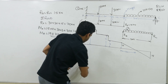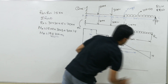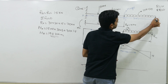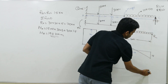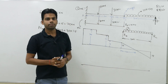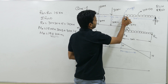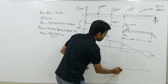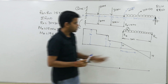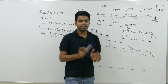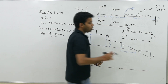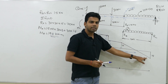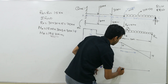Now for the bending moment diagram. At point C, which is a pin support, bending moment is zero. At point B, which is an internal hinge, bending moment is also zero. The maximum bending moment occurs where shear force is zero. Since there is linear (x¹) shear force in that region, the bending moment curve is a second-degree parabola.